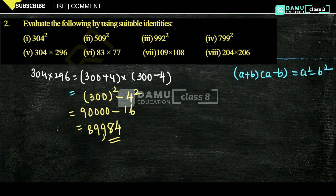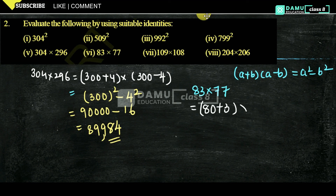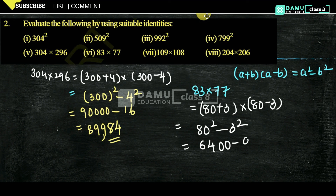Our next one is 83 into 77. That we can write in the format of (80 plus 3) into (80 minus 3). So applying the (a+b)(a-b) formula: 80² minus 3². 80² is 6,400 and 3² is 9. So 6,400 minus 9 equals 6,391. This is the value for 83 times 77.